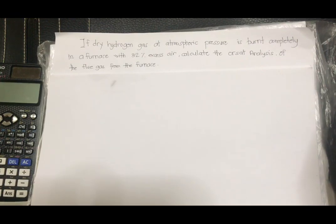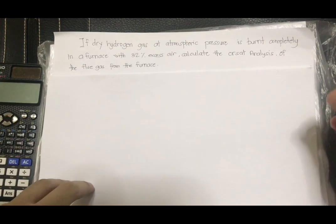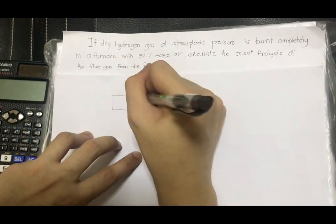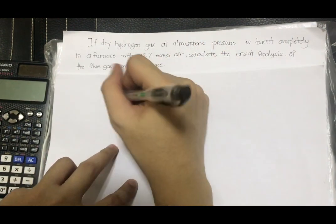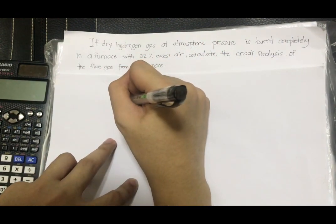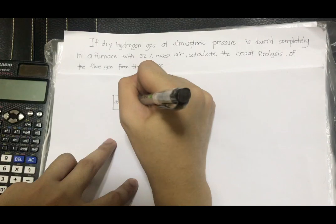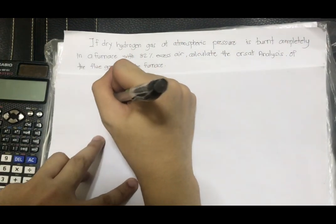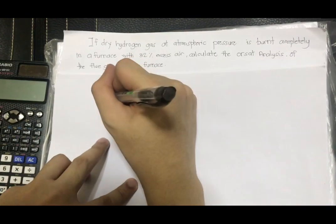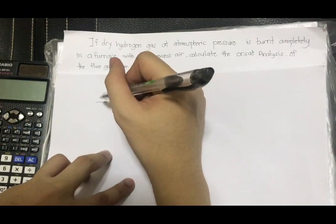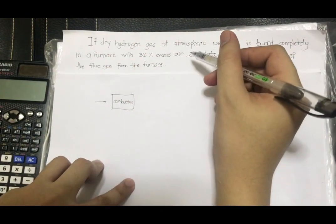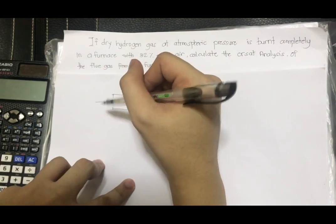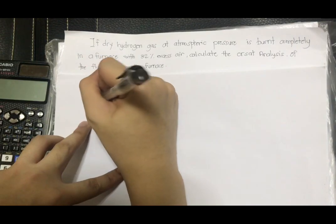So first thing to do is draw a diagram. This box will represent the combustion. And here is the fuel. So in our problem, the fuel is dry hydrogen gas. So here, we'll just put the chemical formula H2.